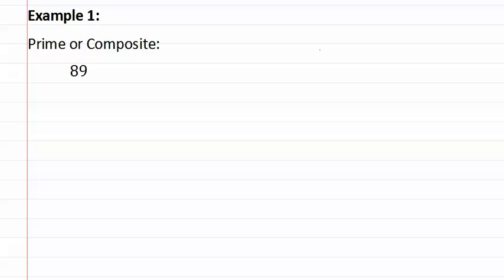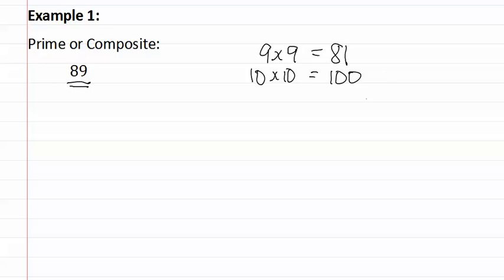Squares are numbers such as one times one, two times two, or three times three — it is the number times itself. We look for the number that would be directly below and directly above the number in question. We know that nine times nine is eighty-one, which would be the number directly below eighty-nine. We also know ten times ten equals one hundred, which would be the number directly above eighty-nine.